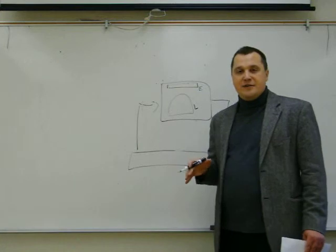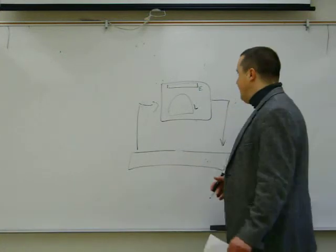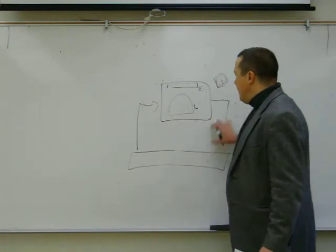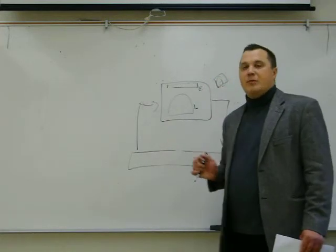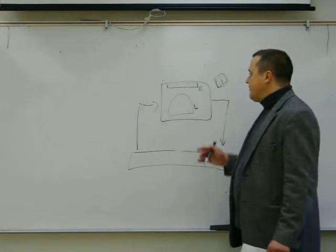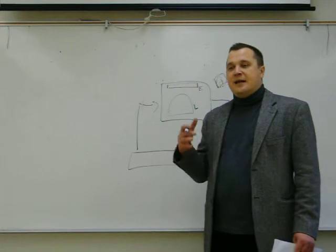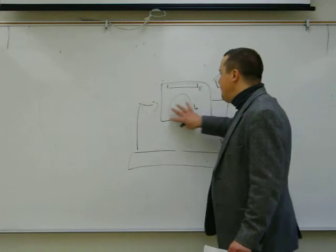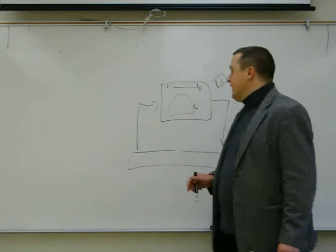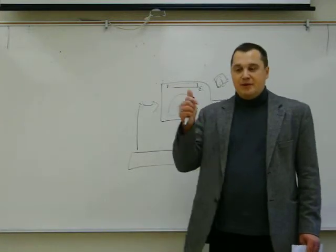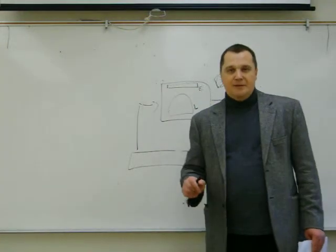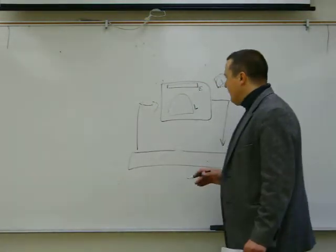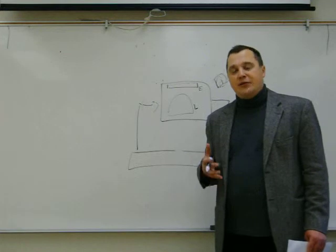We are going to study each of these branches more closely in the next section. There is also the judiciary, which settles conflicts between rules or institutions, and we will examine that later. Political systems differ because the powers and the relationship between these institutions vary. There are three major models: presidential, semi-presidential, and parliamentary — with semi-presidential being a mix of the other two.